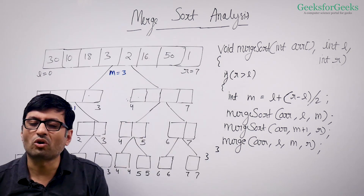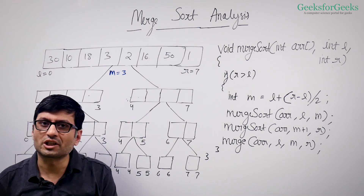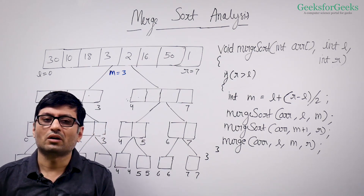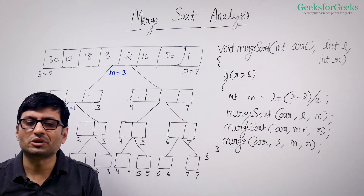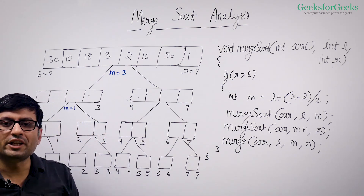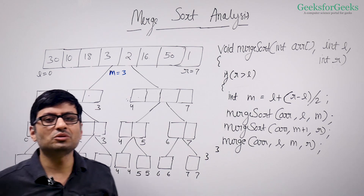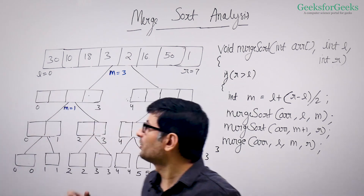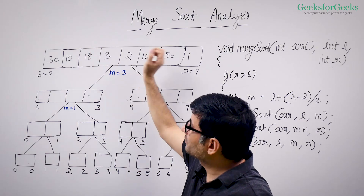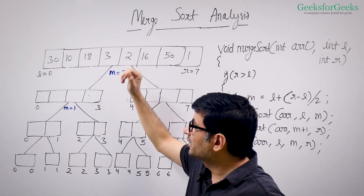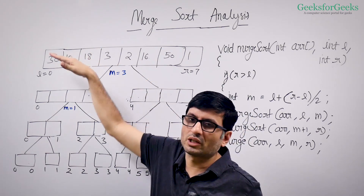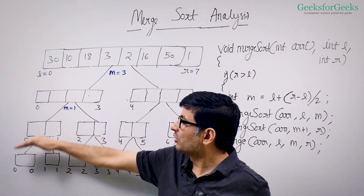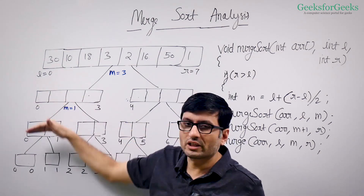I have drawn here a sample recursion tree to get an idea of how to compute the time complexity. The idea we are going to use is this: we are going to compute the work done at every level of this recursion tree and then sum all the work done at every level.